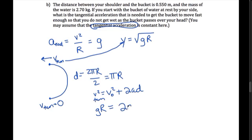And we have 2 times a tan, which is what we want to solve for, times the distance d, which is πr. And then you can go ahead and plug in all your numbers, and you'll find that a tan comes out to be something like 1.56 meters per second squared.